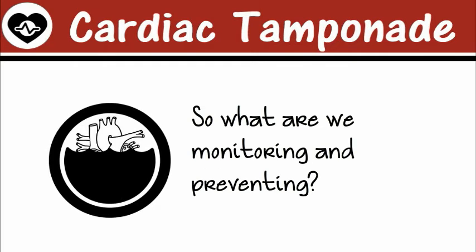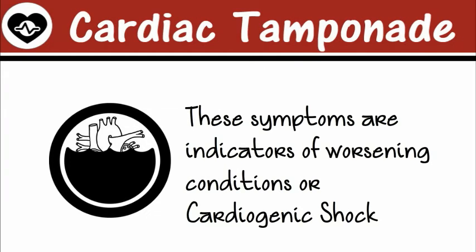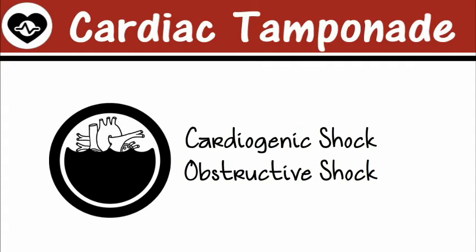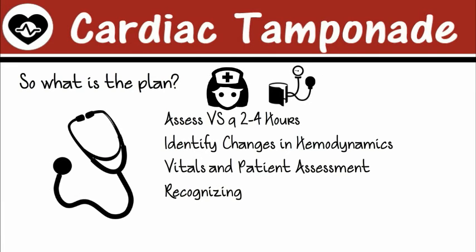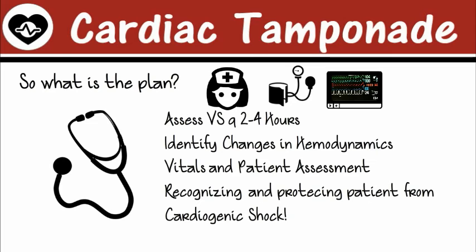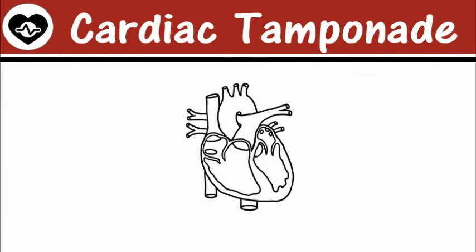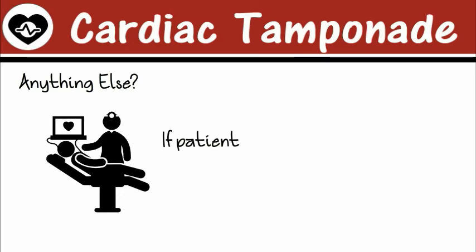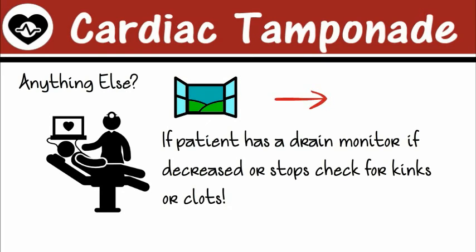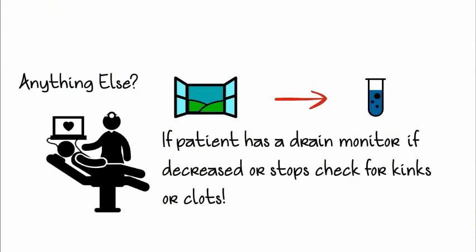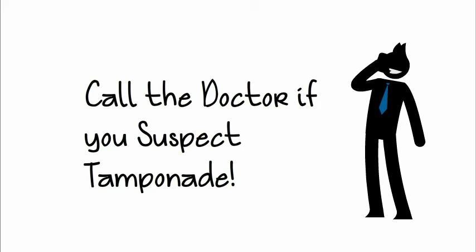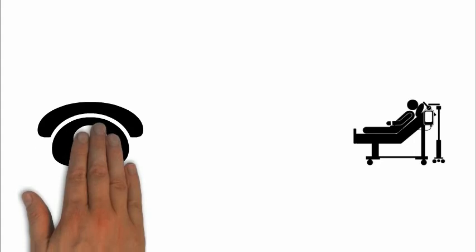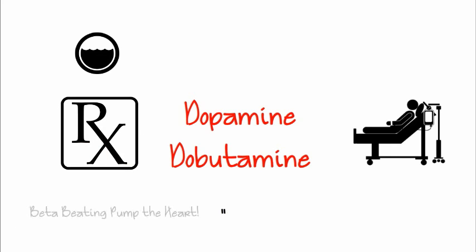What are we monitoring and preventing? Cardiogenic shock — specifically obstructive cardiogenic shock, because the blood flow can't get in or out. The plan: assess vital signs every 2 to 4 hours, recognize changes of cardiogenic shock, and monitor vital signs in patients with potential histories like trauma or myocardial infarction. Ultimately, protect the patient from cardiogenic shock. If a patient has a pericardial window, monitor that drain for decreased drainage or stops, and check lines for kinks or clots. If they're on a ventilator, decrease the PEEP. Always call the doctor if you suspect cardiac tamponade, because if it's cardiogenic shock, they might order medications like dopamine or dobutamine to help with the fluid and to pump the heart.